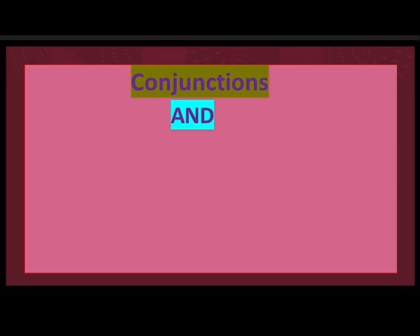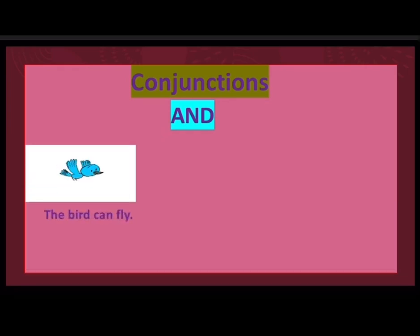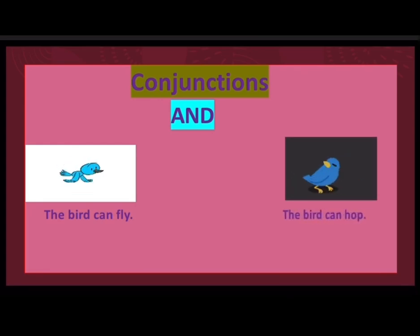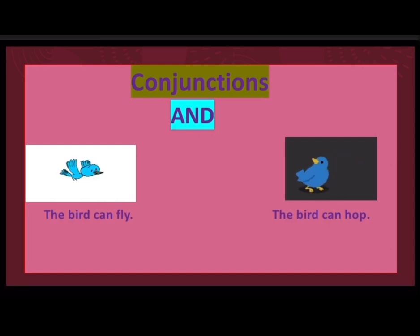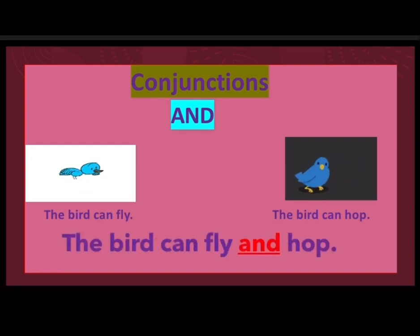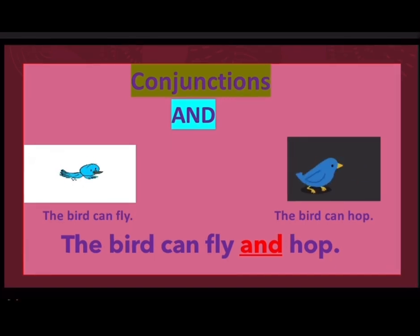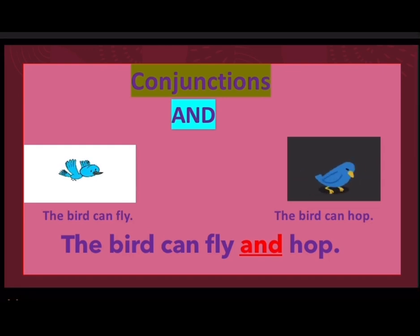Let us start with 'and.' The bird can fly. The bird can hop. We can put 'and' to join these two sentences. 'And' is a connecting word that has joined two words: fly and hop. So it tells us that the bird can fly as well as hop.